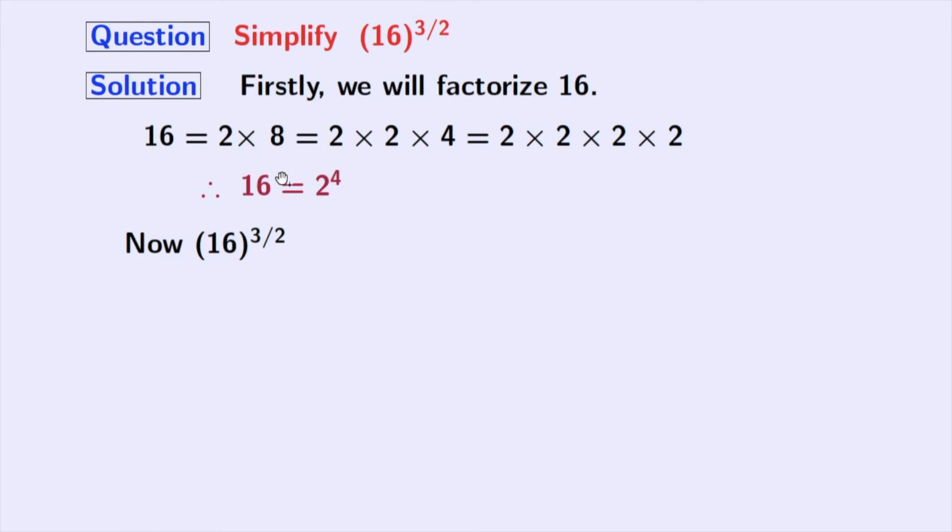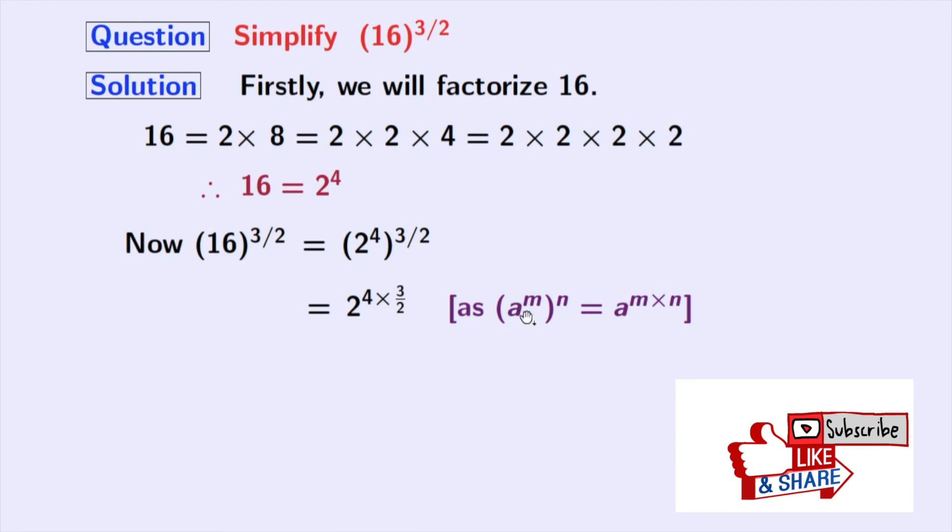Using this fact, we will derive this as 2 power 4 whole power 3 by 2. Now we will express it as 2 power 4 times 3 by 2. As we know that a power m whole power n equals a power m times n. Here a is 2, m is 4, and n is 3 by 2.